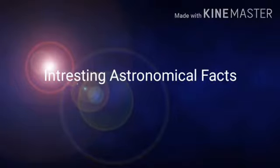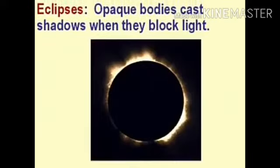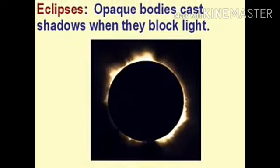Next is an interesting astronomical fact. First, let's see what an eclipse is. An eclipse is when opaque bodies cast shadows, blocking light.